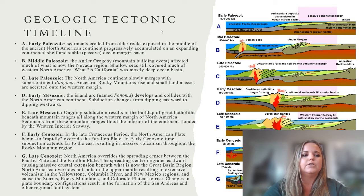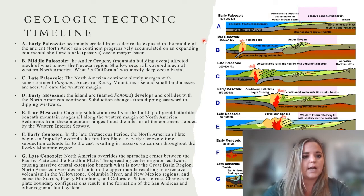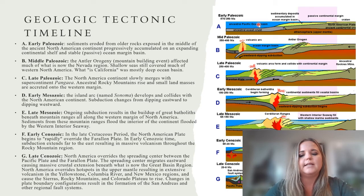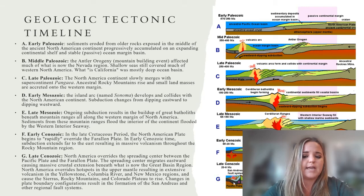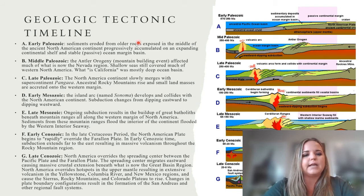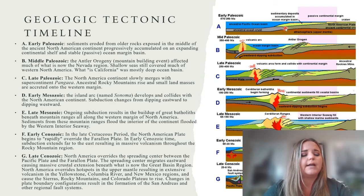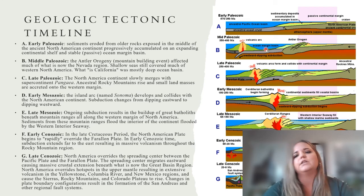Let's talk about the tectonics of California. This diagram gives a graphic visualization of the tectonic history of California. In the early Paleozoic, 570 to 350 million years ago, sediments eroded from older rocks accumulated on an expanding continental shelf and a stable passive ocean margin basin — things were relatively flat and we just see sediments. Then in the mid Paleozoic, we start to see the Antler Orogeny — a mountain-building event that affected not just California but also what is now Nevada — while shallow seas still covered most of western North America.